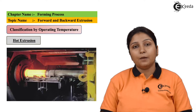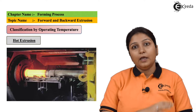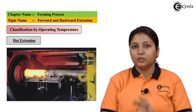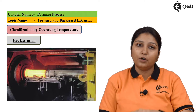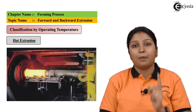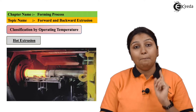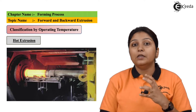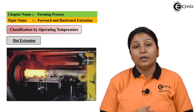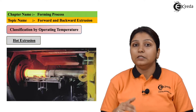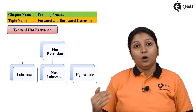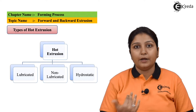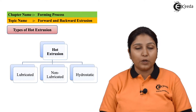This diagram shows hot extrusion. The whole process is the same — it can be forward or backward — but the material coming out should be heated so that it can be easily formed. Hot extrusion is further classified into three types: lubrication, non-lubrication, and hydrostatic.